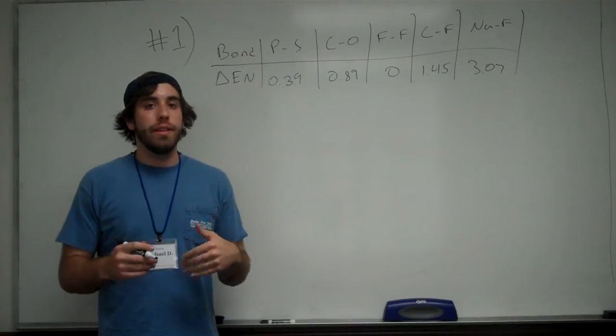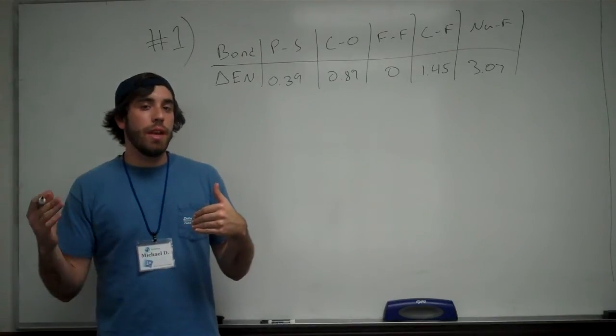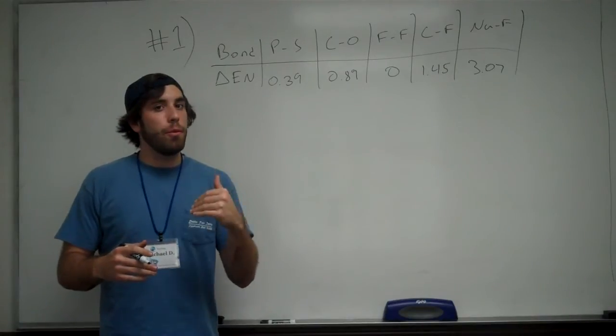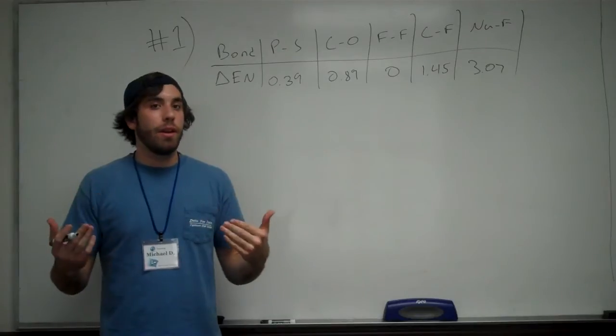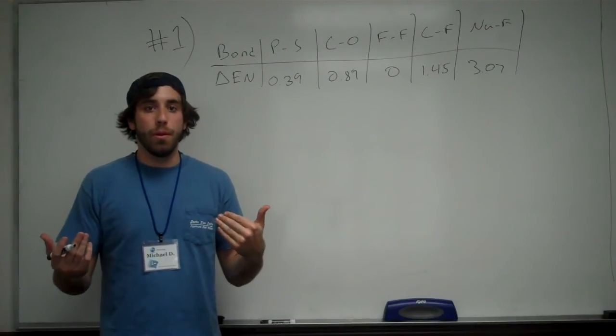If you have a difference in electronegativity that's greater than 0.4 but less than 2, then you're going to have a polar bond and the greater the difference in electronegativity, the more polar the bond.